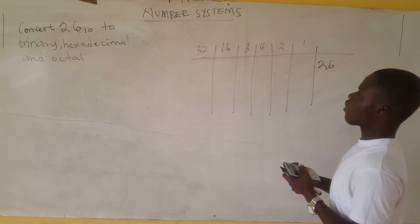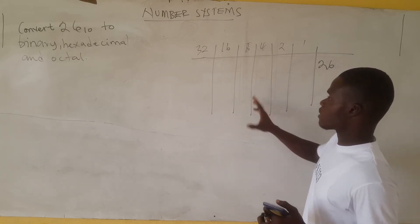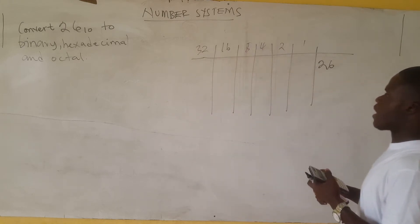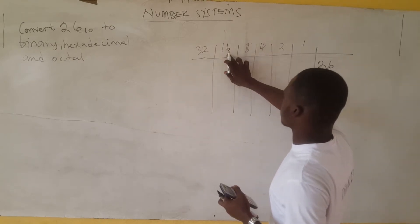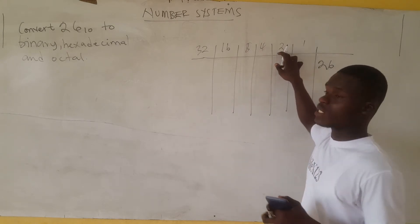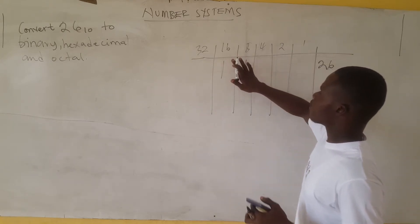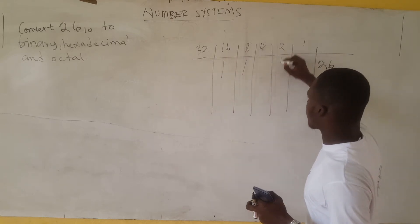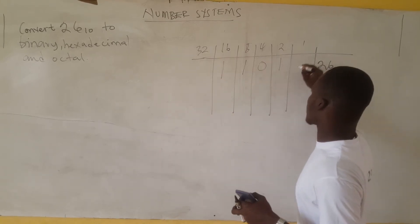Now, one of the simple ways I do this is I find a way to add the numbers to get 26. I see that 16 plus 4 is 20 — wait, 16 plus 8 is 24, and 24 plus 2 is 26. So the numbers involved in the addition are where you write the ones, and you put 0 at the other positions.